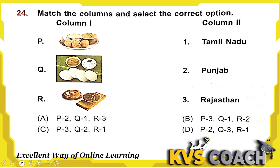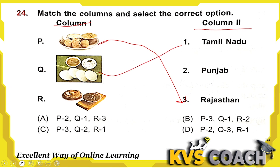Next: match the column — food with the state it is from. Dal Baati Churma is the dish from Rajasthan. Sambar Idli is the dish from Tamil Nadu. Makke ki Roti and Sarson da Saag is the dish from Punjab. So P is 3, Q is 1, and R is 2. The right answer is option B.